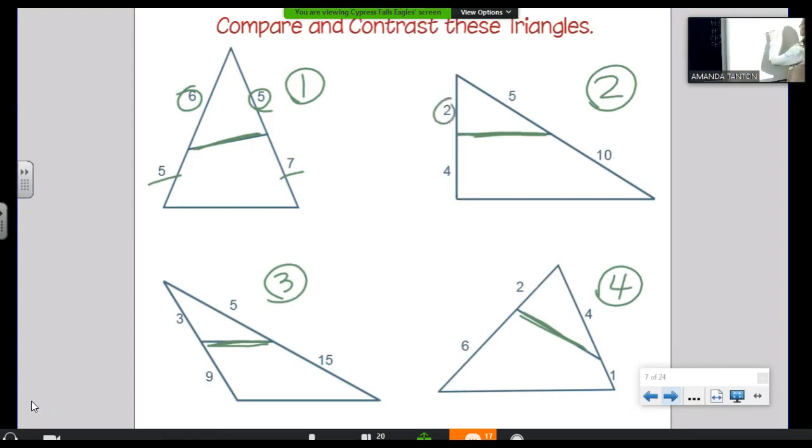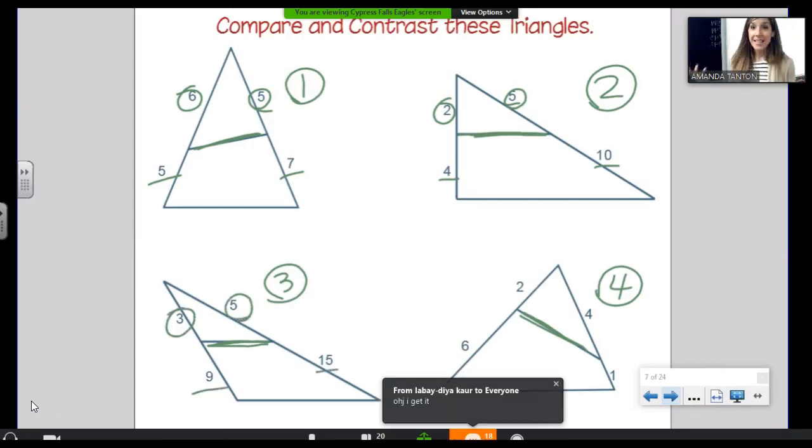Let's look at this. Two is to four as five is to ten. Ding, ding, ding. Two doubled is four. Five doubled is ten. Look at this one. Three is to nine as five is to fifteen. Ding, ding, ding. Scale factor is three.